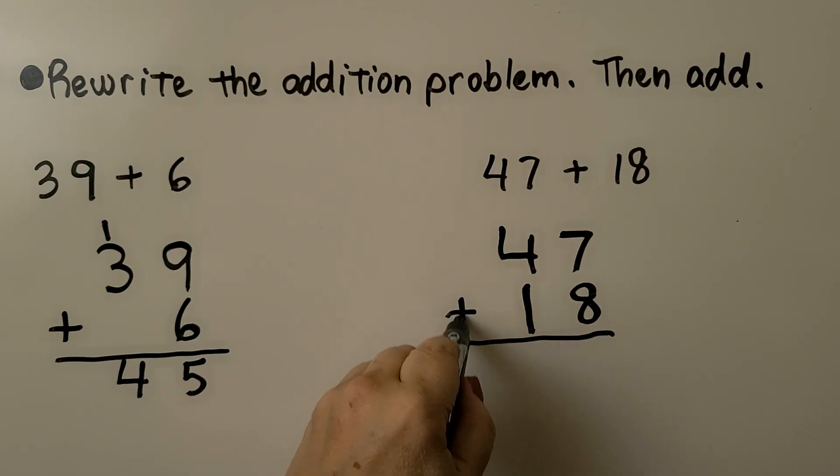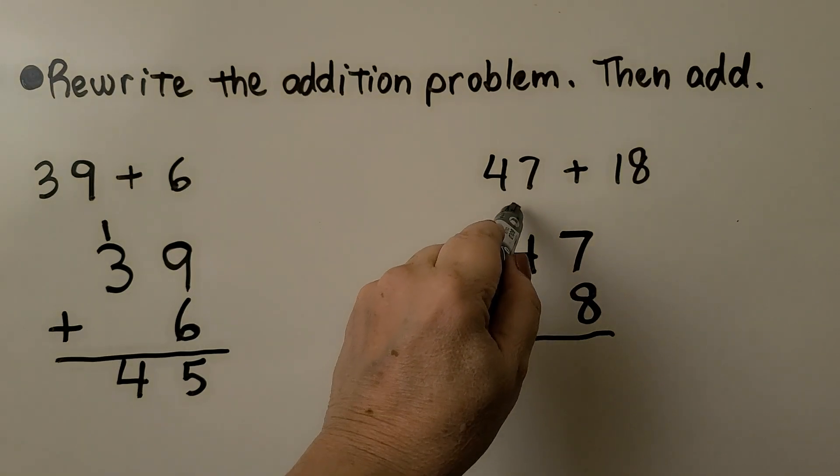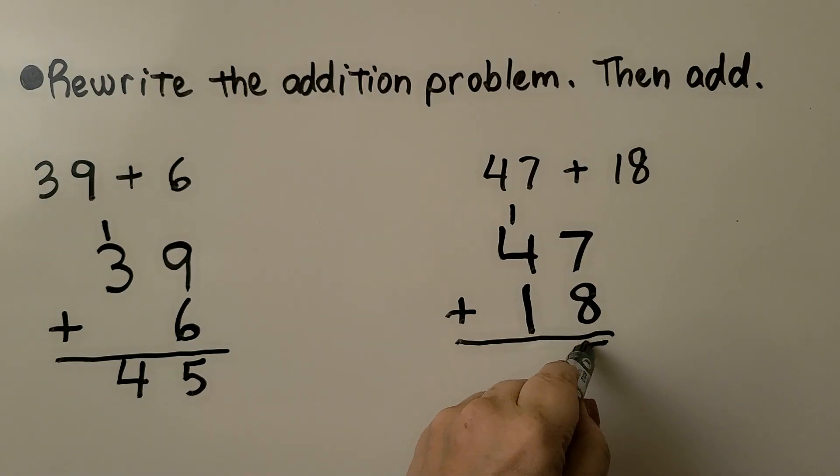Draw our line with a plus sign. We add the ones first. 8 plus 7 is equal to 15. That's 1 ten and 5 ones.